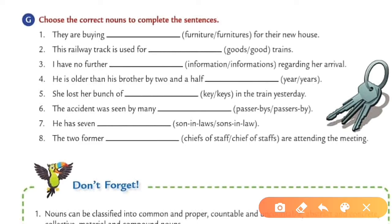Move to Exercise G. Choose the correct noun to complete the sentences. First: they are buying this furniture or furnitures for their new house — furniture is always used in plural form, so the answer is furniture. Next: the railway track is used for goods or good train — goods is always correct as it has no singular form. Next: I have no further information or informations regarding the arrival — it is always information. Complete the exercise in this way.